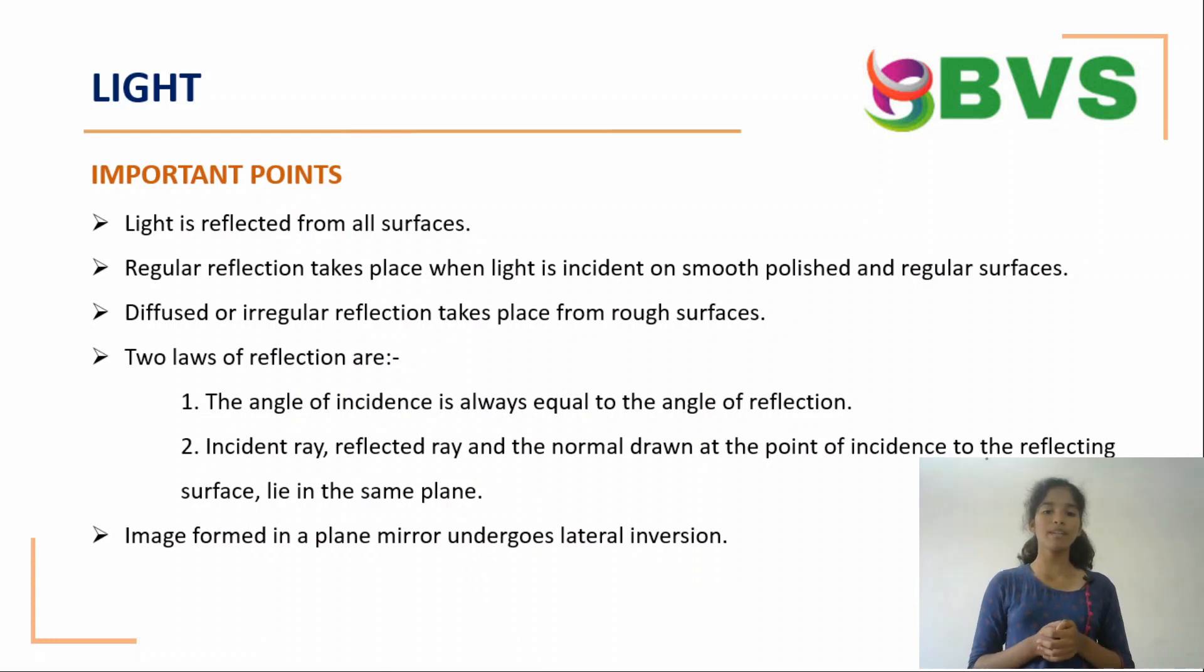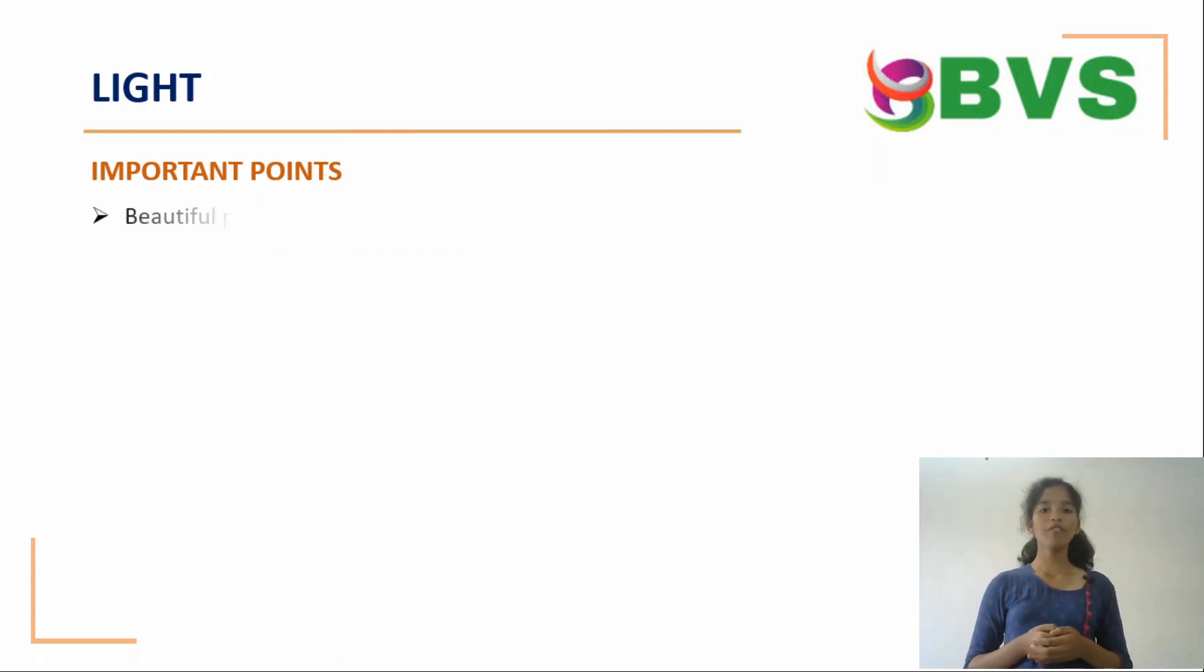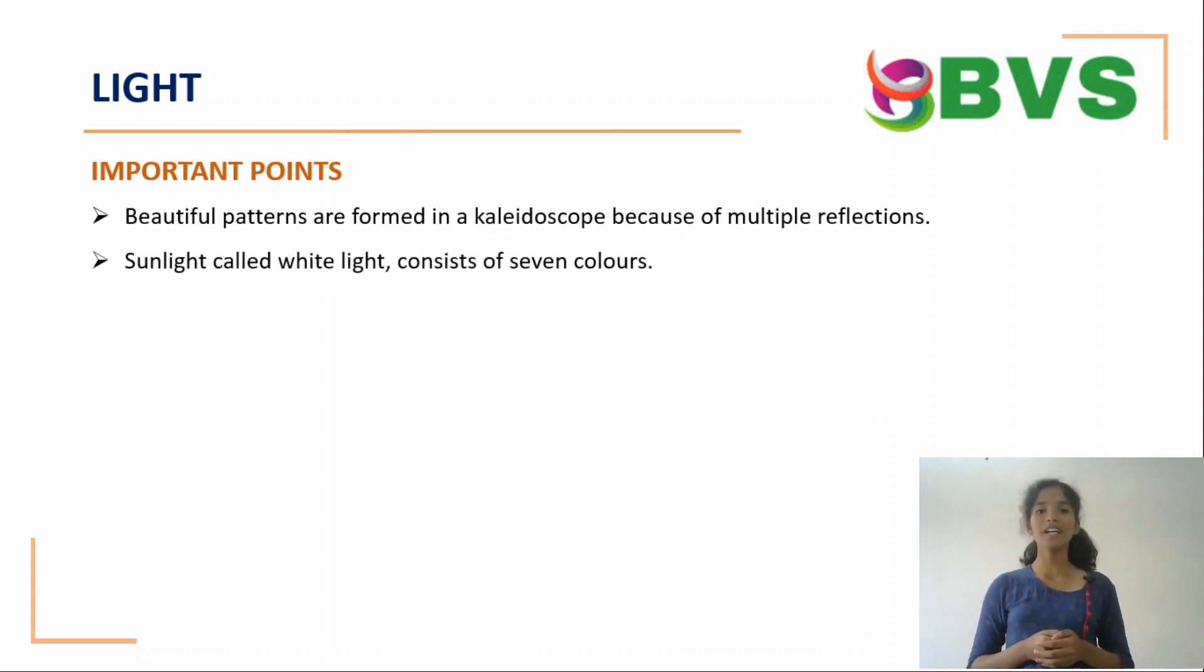Image formed in a plane mirror undergoes lateral inversion. Two mirrors inclined to each other give multiple images. Beautiful patterns are formed in a kaleidoscope because of multiple reflections. Sunlight, called white light, consists of seven colors. Splitting of light into its constituent colors is known as dispersion.